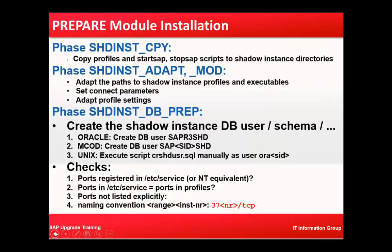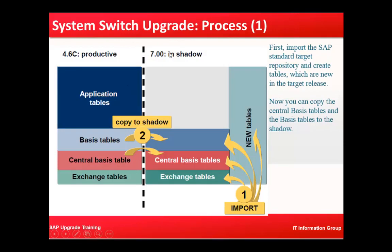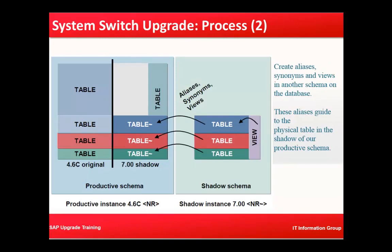Now let's see the system switch upgrade process. On the left side you have your 4.6c productive system, on the right side you have your 7.0 shadow system. As step one, you import into exchange tables and central basis tables — the new tables are imported into the shadow schema. In step two, a copy-to-shadow takes place, copying from the basis tables and central basis tables.